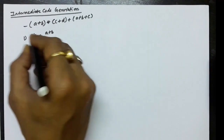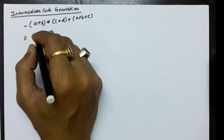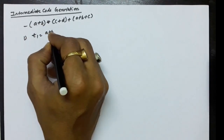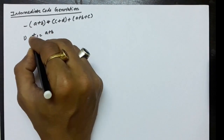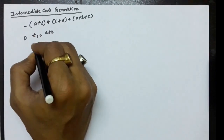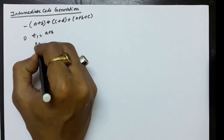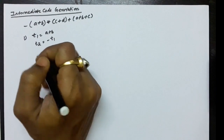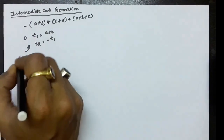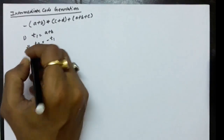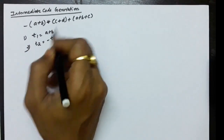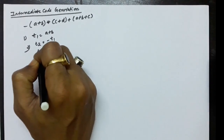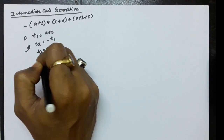Let us first represent a plus b with temporary variable t1. Then t2 equals minus t1 — this is the unary negation operation. Next, to represent c plus d in a temporary variable, we use t3.